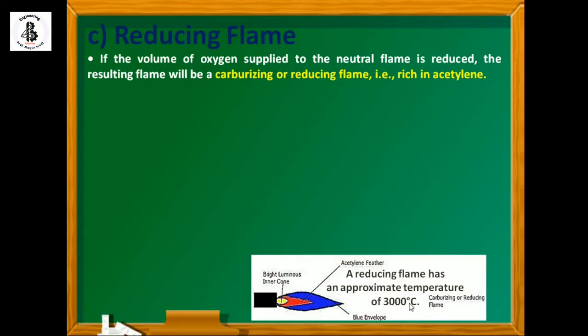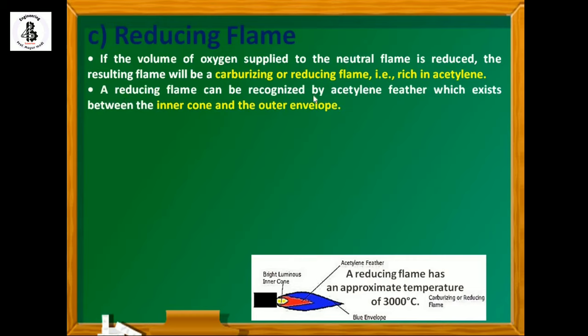In case of the reducing flame, if the volume of oxygen supplied to the neutral flame is reduced, the resulting flame will be carburizing or reducing flame. Or in simple way, enrichment in the acetylene side. A reducing flame can be recognized by acetylene feathers which exist between the inner cone and the outer envelope.